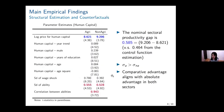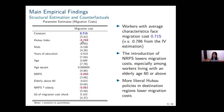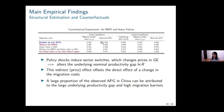Our structural estimated parameters are largely consistent with the corresponding numbers from the reduced form regressions. Consistent with our earlier findings, we find that the NRPS reduced migration costs, with the effect particularly pronounced for individuals living with an elderly person aged 60 or above. As expected, more liberal hukou policies in destination regions also help reduce migration costs.